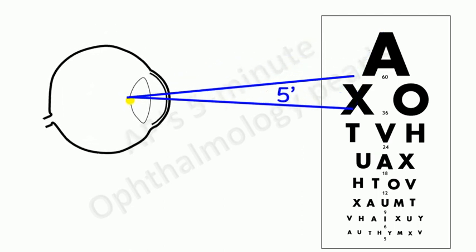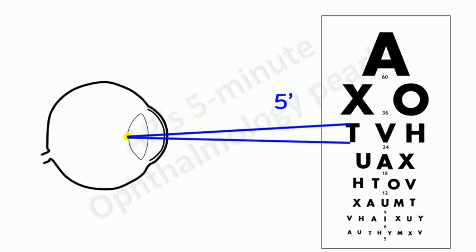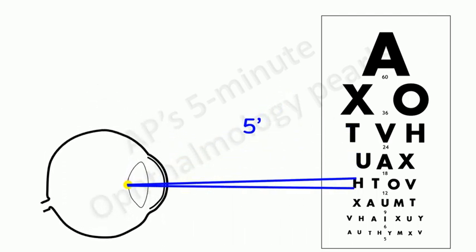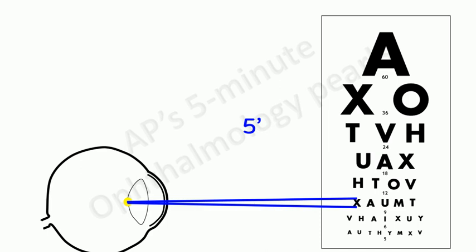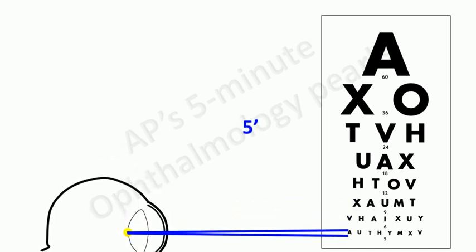A letter in the second row subtends an angle of five minutes at a distance of 36 meters. The other lines subtend an angle of five meters at 24 meters, 18 meters, 12 meters, 9 meters, 6 meters and if there is another line at 5 meters.